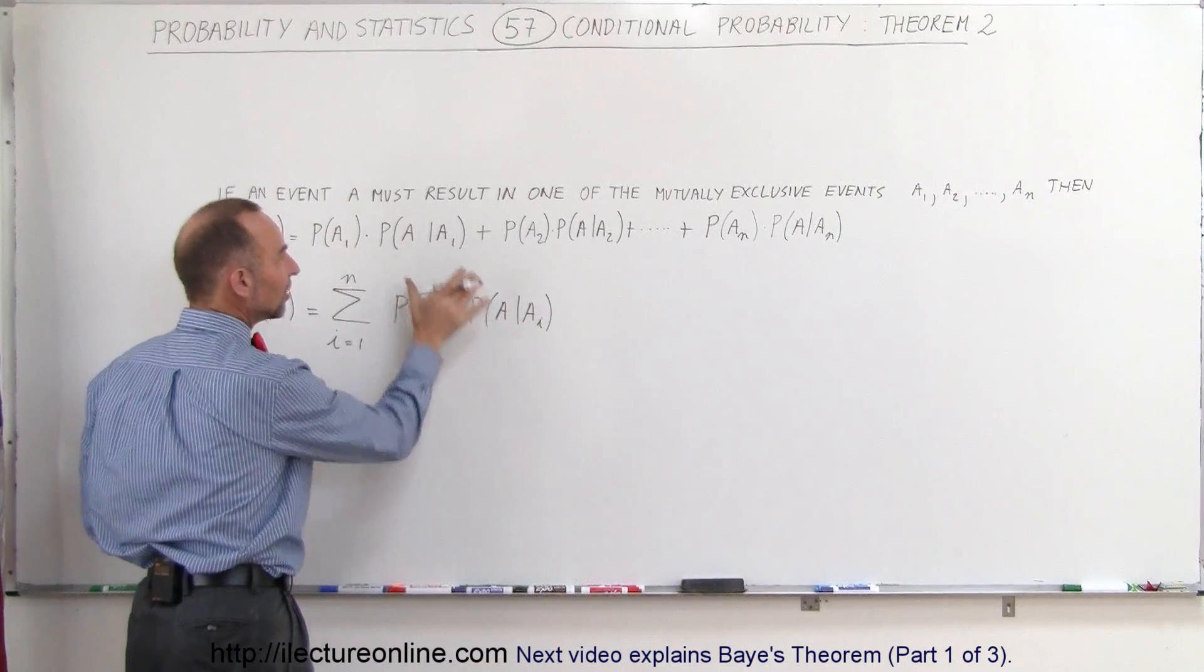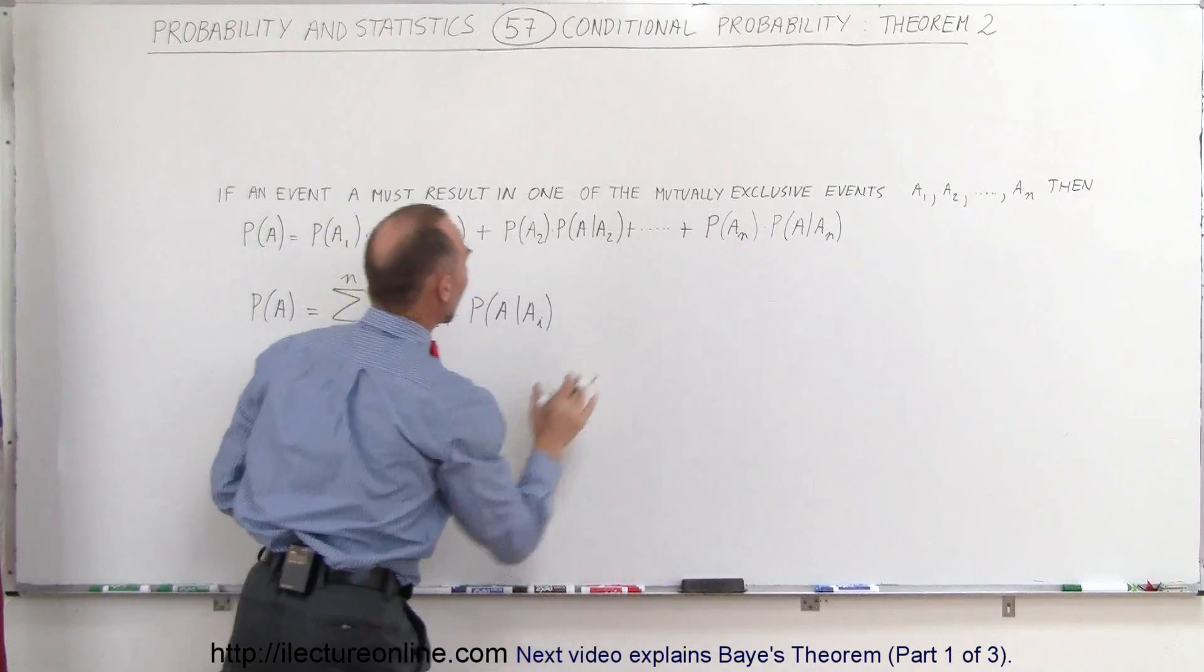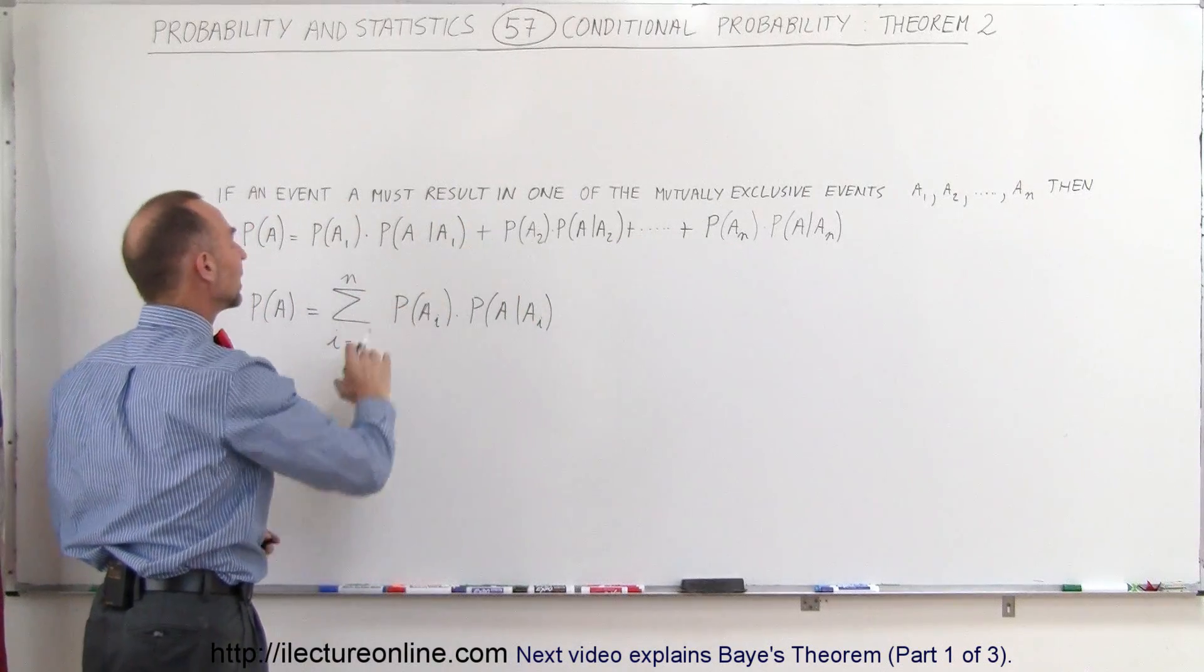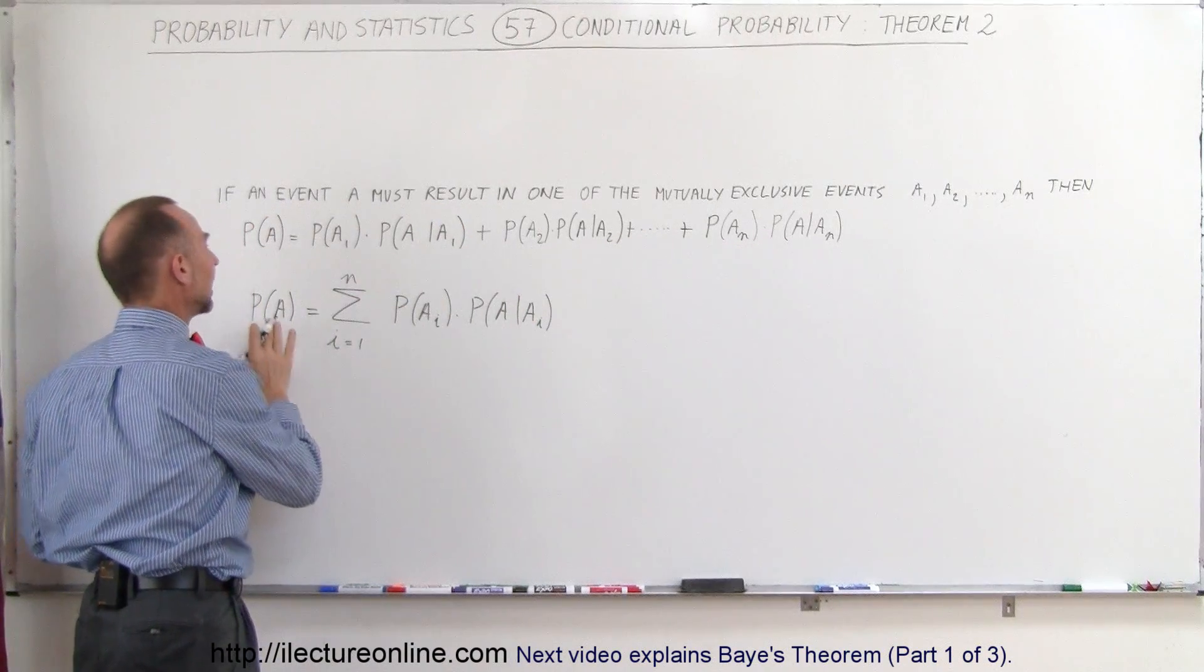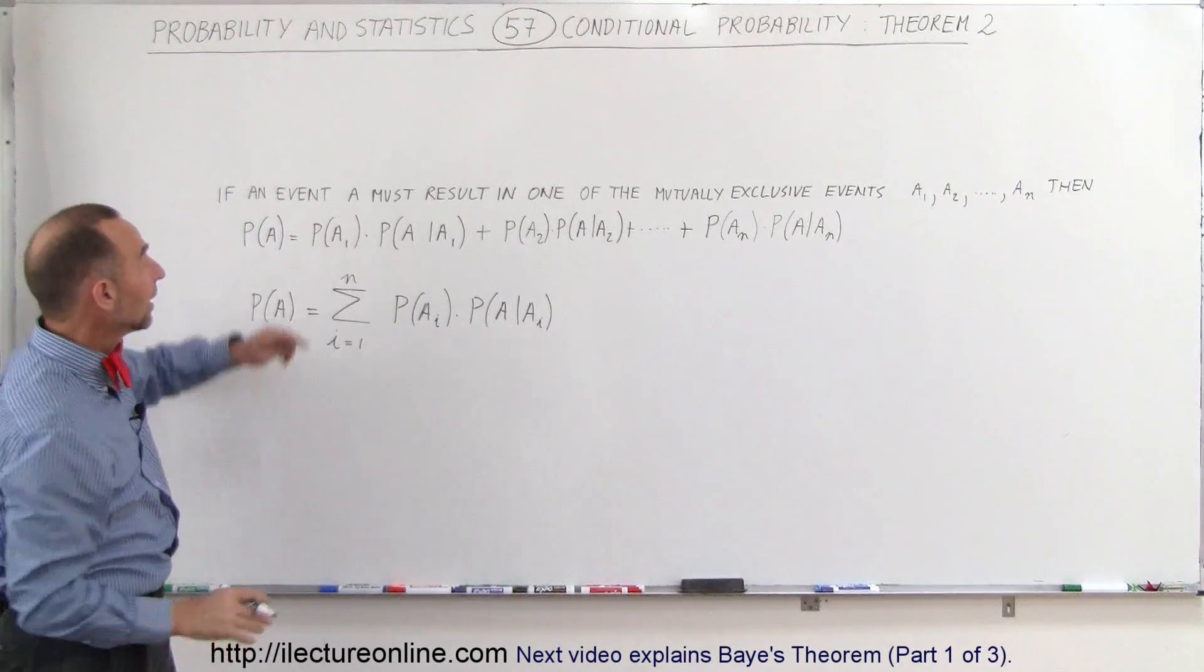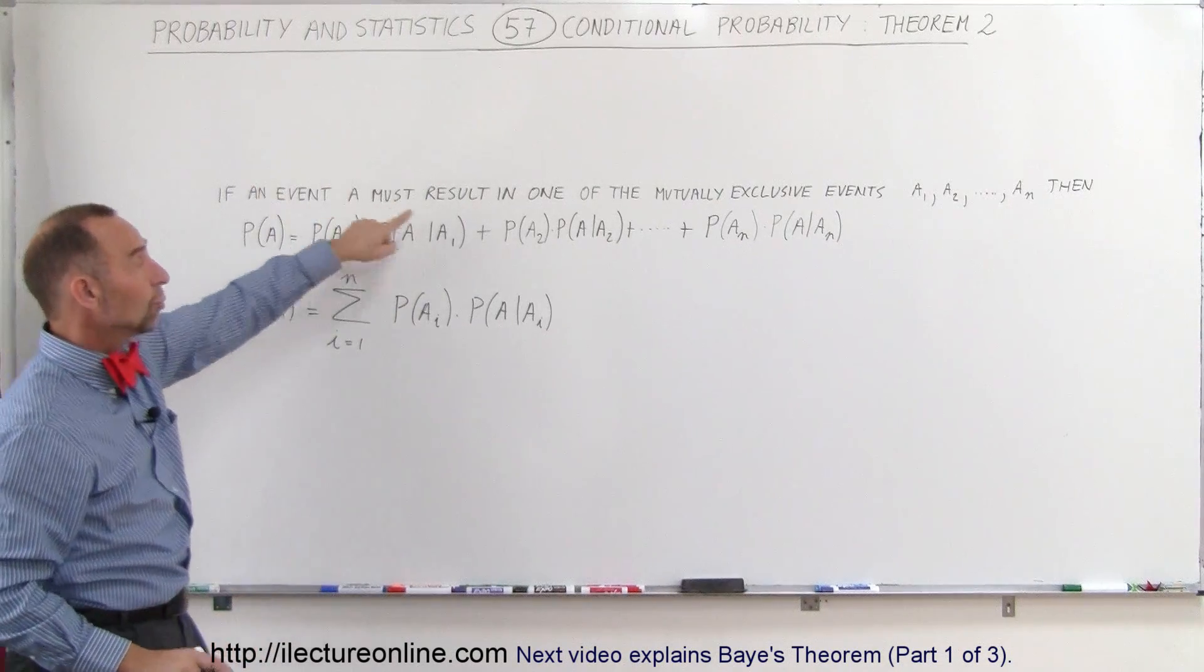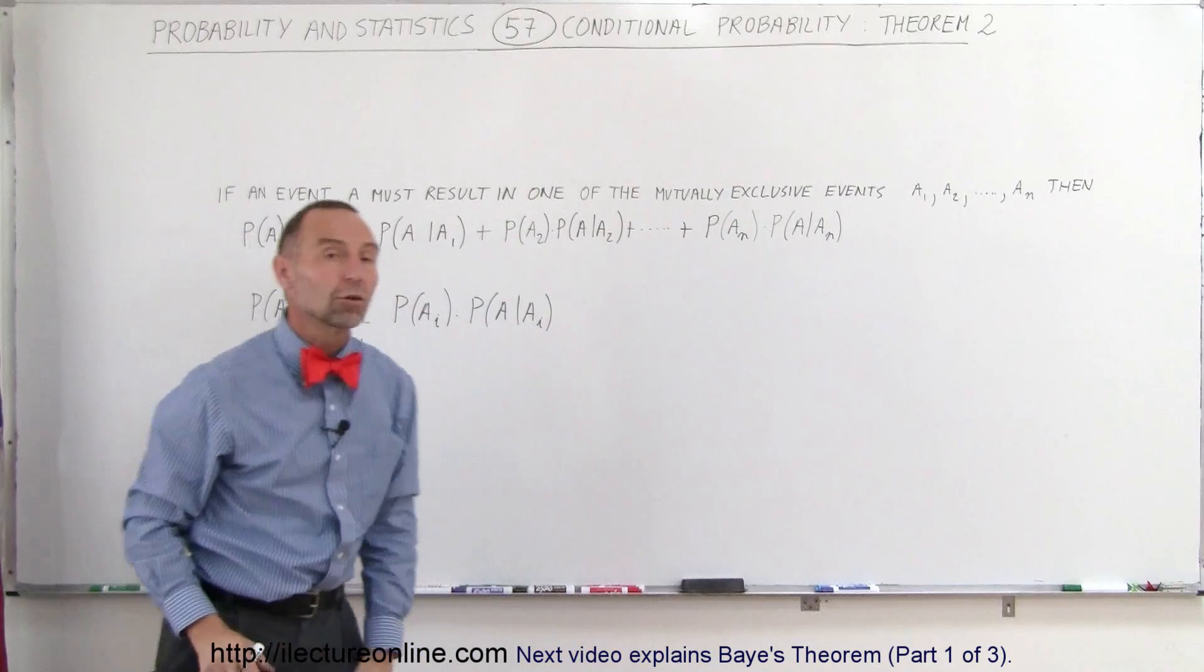So you can see that we simply sum these up one at a time and it's simply we add the sum together and that is equal to the probability that A has occurred provided that event A must result in one of the following to occur.